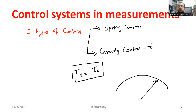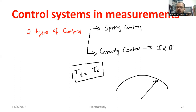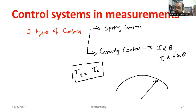Gravity control is done by using a mass. It follows acceleration due to gravity — g is equal to 9.81 meters per second squared. The same principle is applied in gravity control. In the case of gravity control, the quantity is directly proportional to the sine of the deflection angle. So I is directly proportional to sine of theta, where theta is the deflection angle.